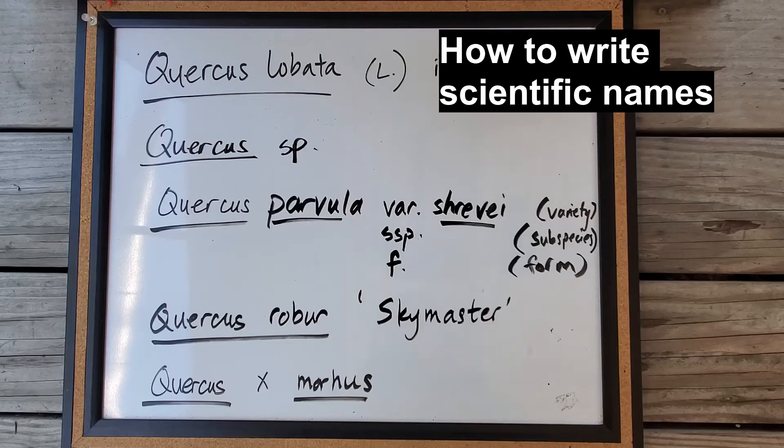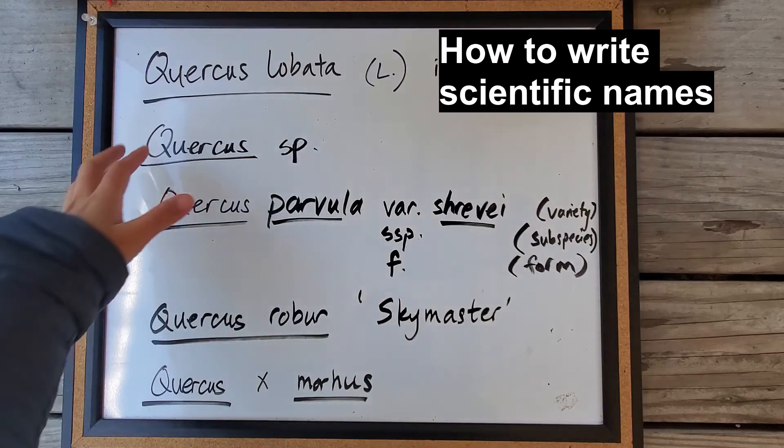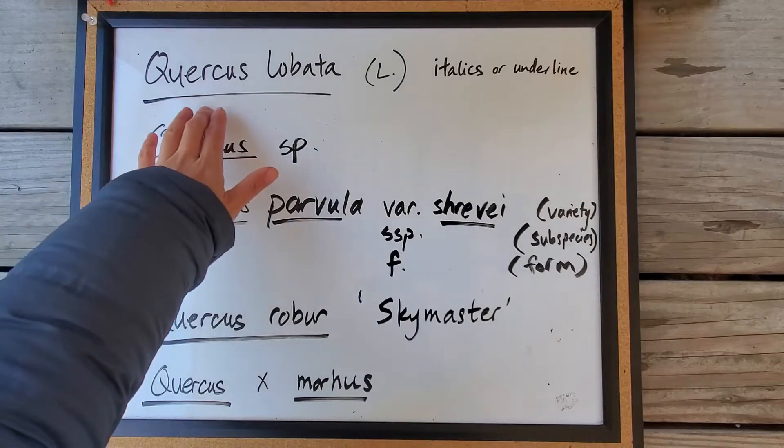So scientific names have some rules around how you write them out, and I have some examples here that I'll go through, all using oaks as an example.